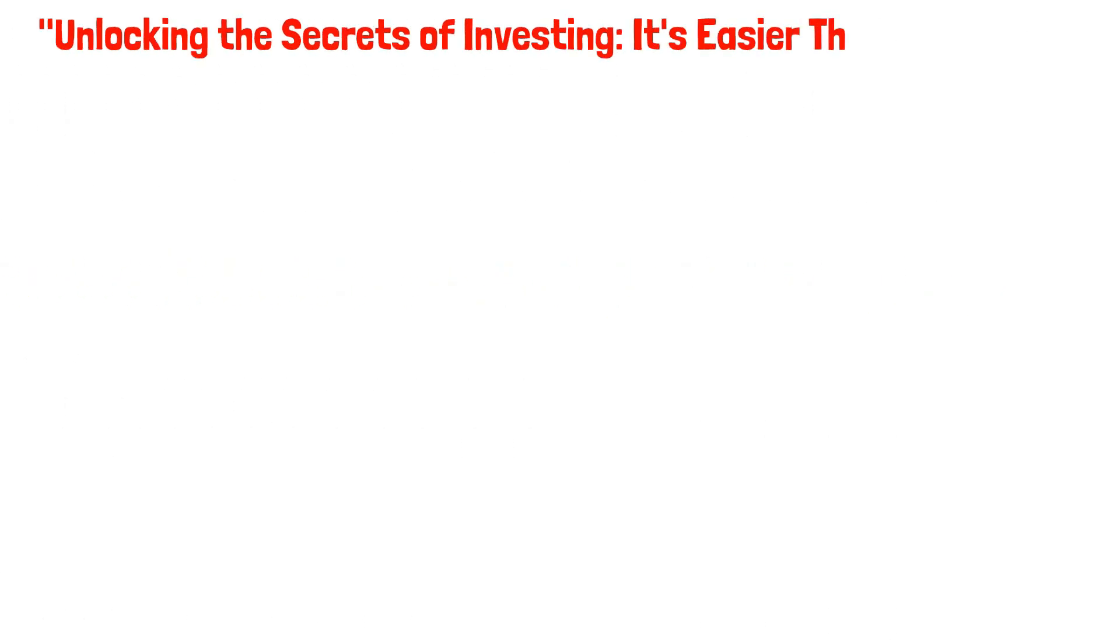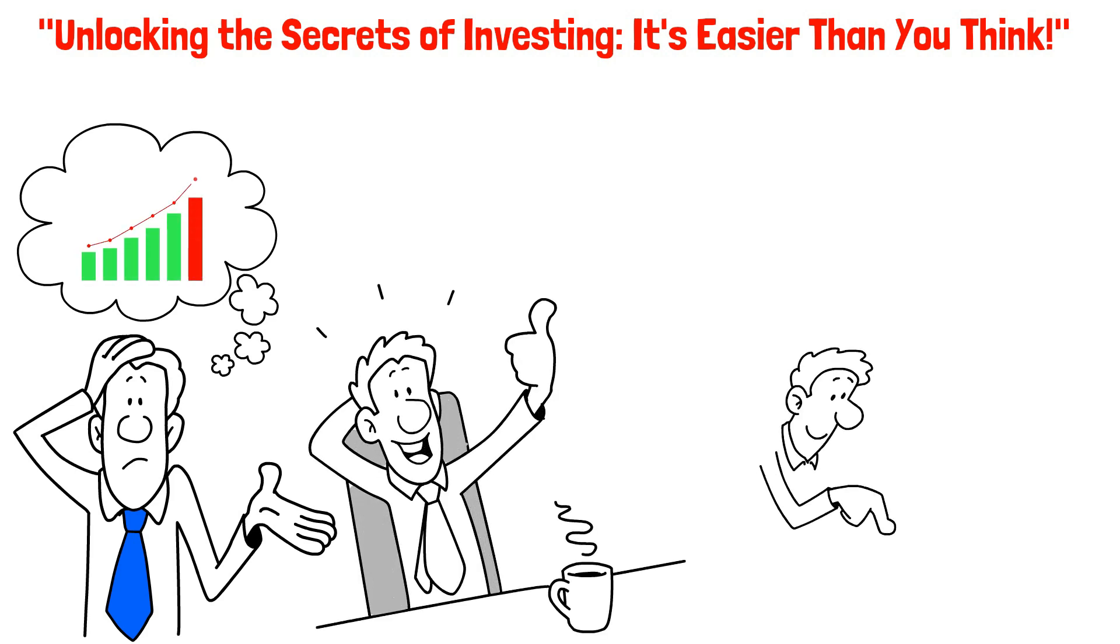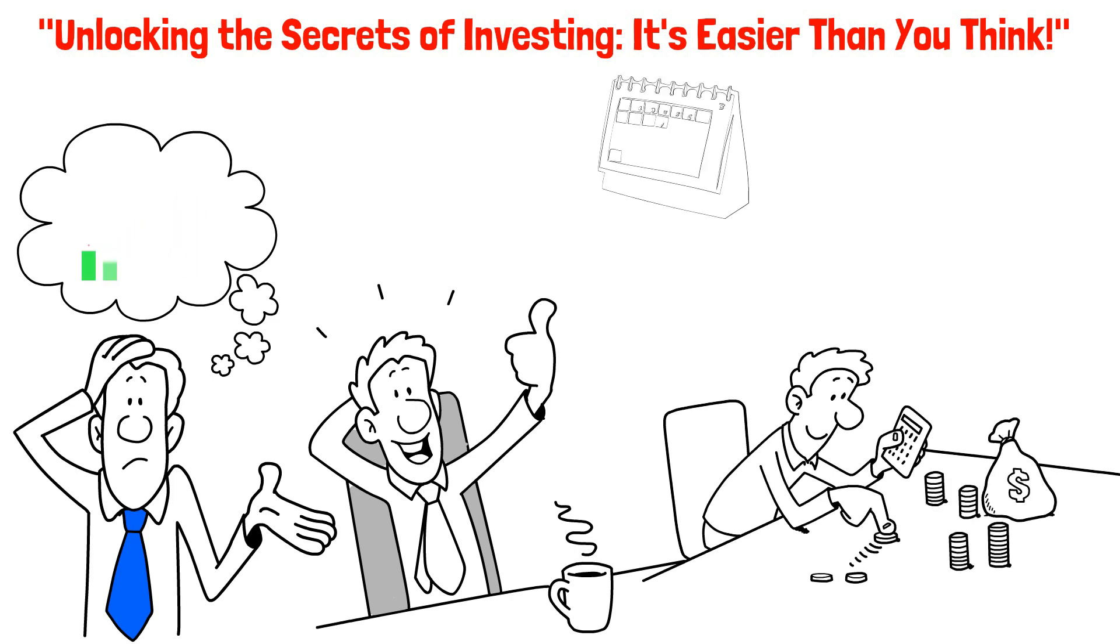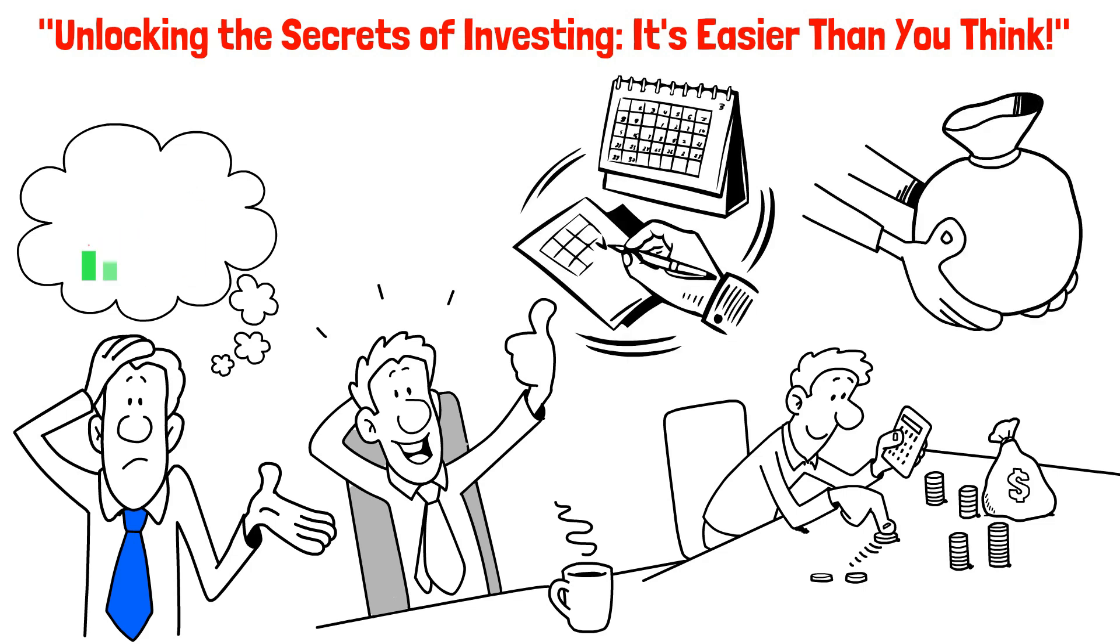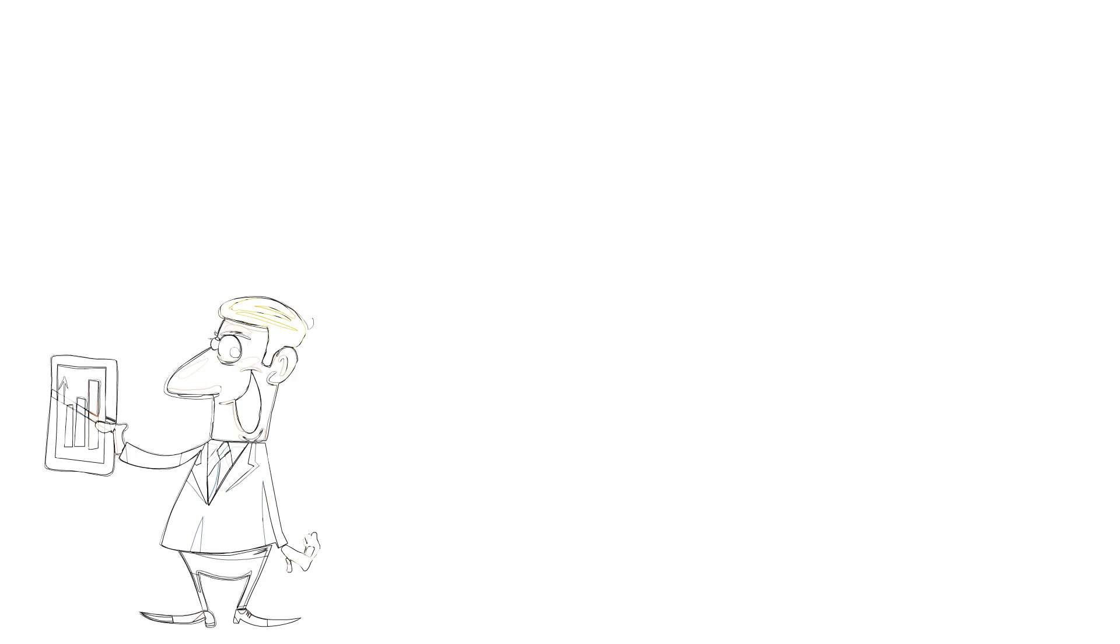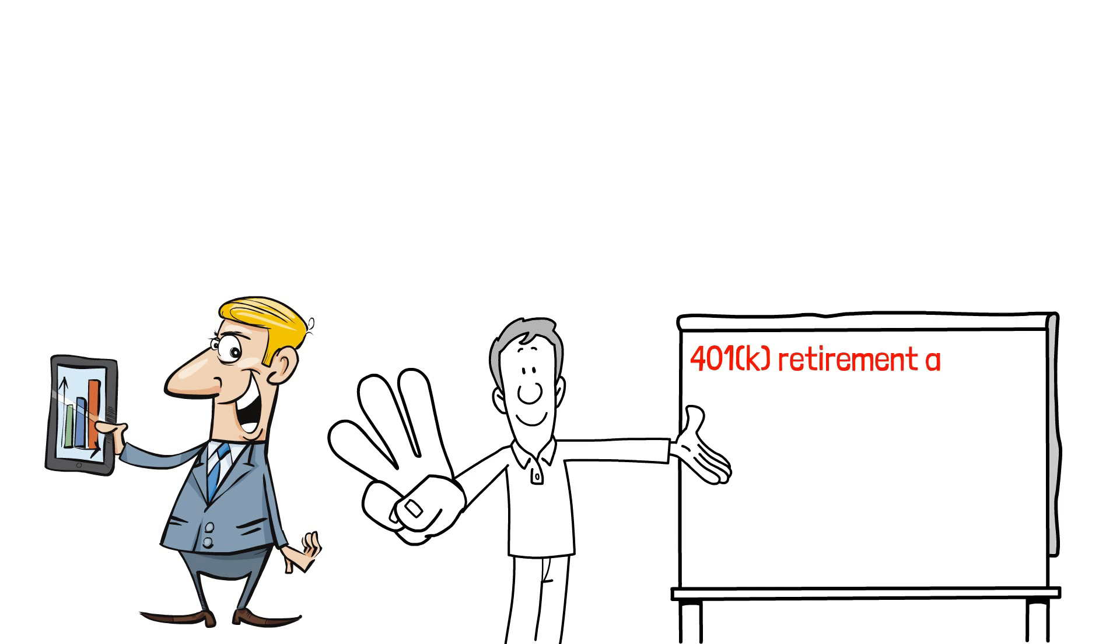Unlocking the secrets of investing: it's easier than you think. Investing may seem like a daunting task, but it doesn't have to be. In fact, it's much simpler than you might imagine. The first step is to ensure that you have your financial house in order. That means creating an emergency fund with at least three months of living expenses and paying off high-interest debt. Once you've taken care of those basics, you're ready to start investing. A great place to begin is with a 401k retirement account, especially if your employer matches your contributions. This is like free money, so it's a great way to get started.